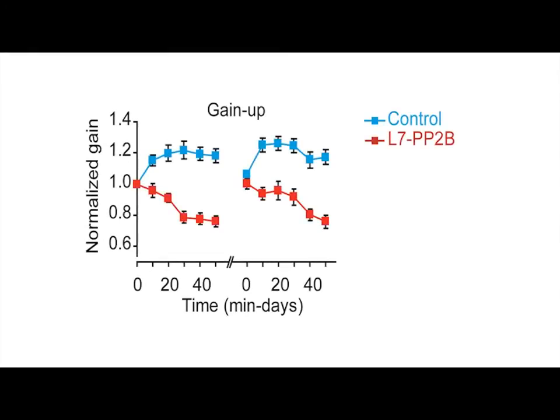And this is indeed what we saw in the normal control animals indicated in blue. Over the course of one hour training, the gain of the eye movements was substantially increased. However, when we subjected the mouse mutant without long-term potentiation to this test indicated in red, we found that these animals were not able to increase their gain.